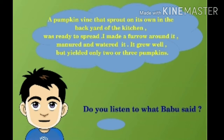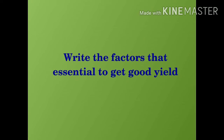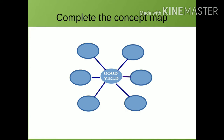In our previous class we discussed about Babu's pumpkin vine. Do you remember that? Babu gave proper care to his pumpkin vine but didn't get good yield. And you also found out the reason behind this. I think you understand well, and also discussed about the factors that are essential to get good yield.